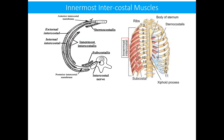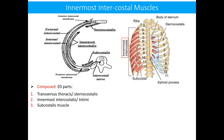The third group of muscles is the innermost intercostal muscle, which is composed of three parts: sternocostalis, intercostal intimi, and subcostalis muscle.